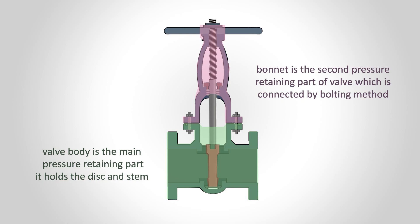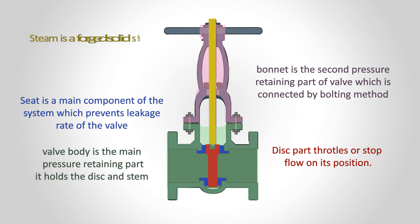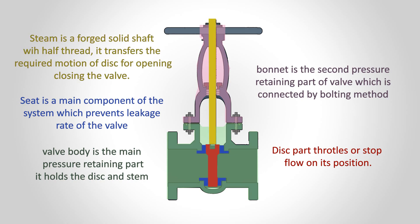The disc throttles or stops flow based on its position. The seat is a main component of the system which prevents leakage in the valve. The stem is a forged solid shaft with an acme thread; it provides the required motion of the disc for opening and closing the valve.